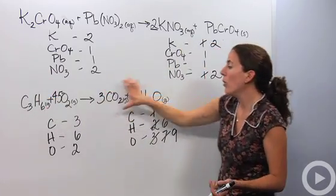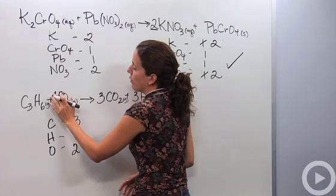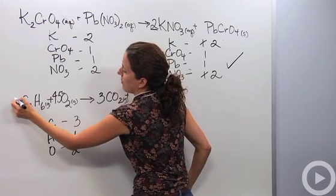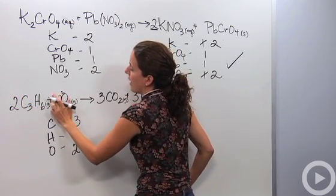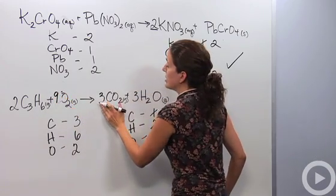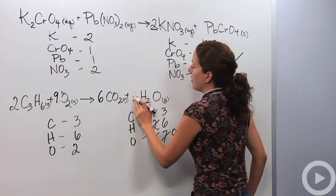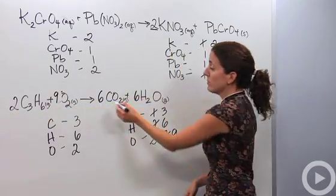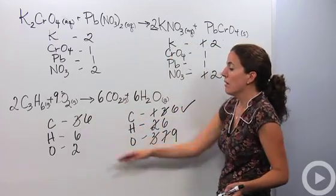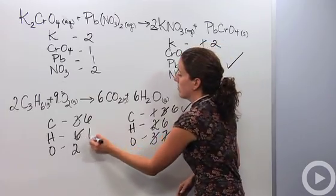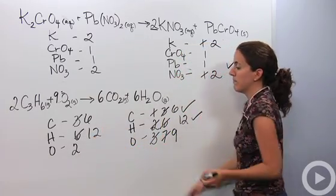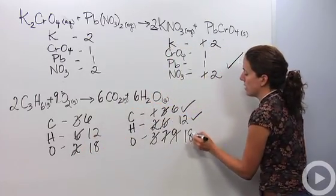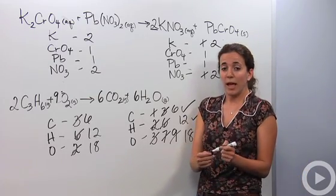A good solution is to multiply the whole reaction by two. So we change all coefficients: the C₃H₆ gets a two, the O₂ coefficient becomes nine (4.5 times two), CO₂ becomes six (three times two), and H₂O becomes six (three times two). Let's check: six carbons on each side — check. Twelve hydrogens on each side — check. Eighteen oxygens on each side: nine times two is eighteen, and six plus twelve is eighteen — check. The equation is completely balanced. That is how you balance chemical reactions.